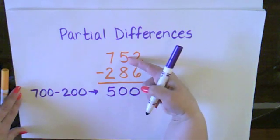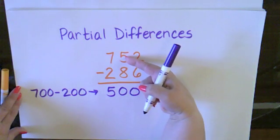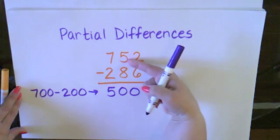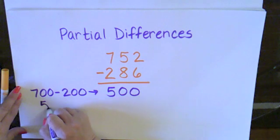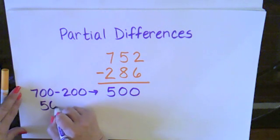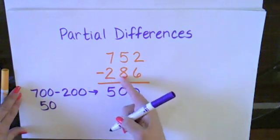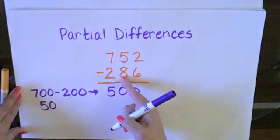Now I'm going to go to my tens place. And I see I have five tens in 752. And five tens, the value of five tens is actually 50. So I need to take 50 and I need to subtract eight tens or 80.